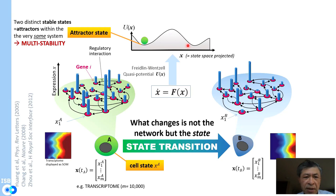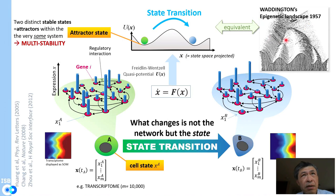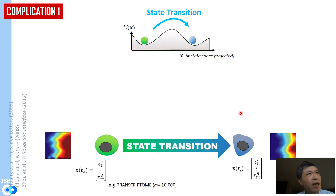These complicated networks generate multiple attractor states, leading to what is called multistability. The key idea, explored since the 1940s, is that we are interested in transitions. Waddington already tried to frame development as a process taking place in these landscapes where natural states are sought after by the network — giving rise to the robustness of development. This is a basic conceptual idea we should also use for regenerative medicine.